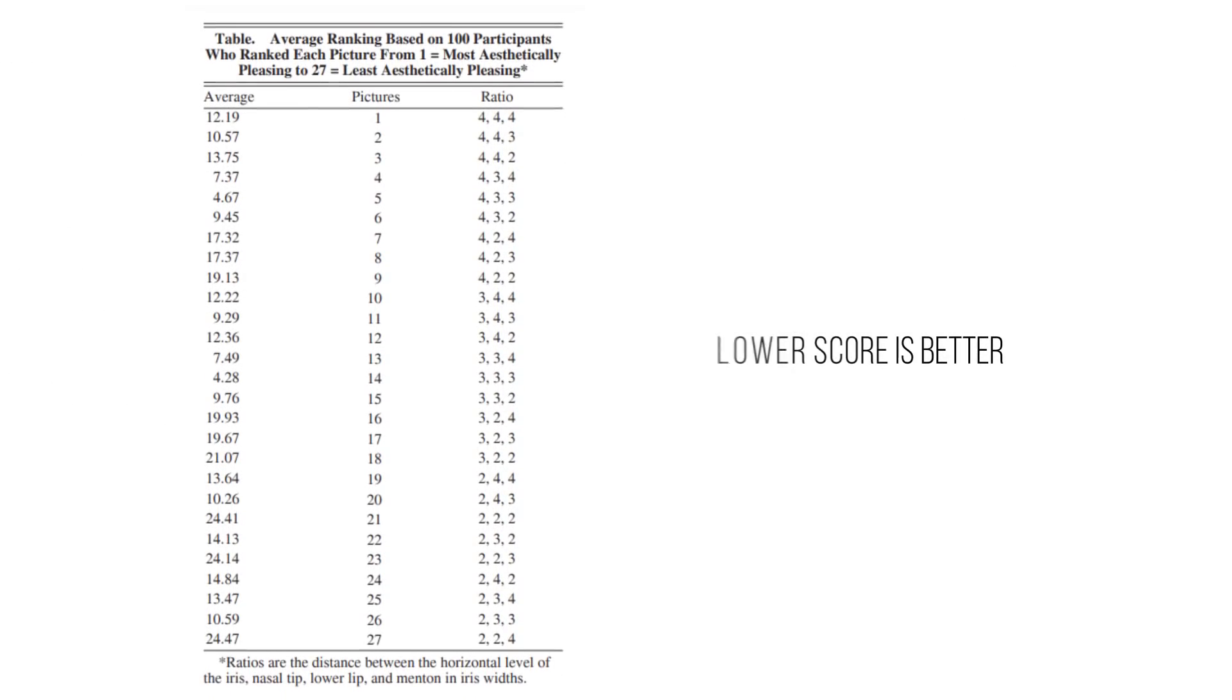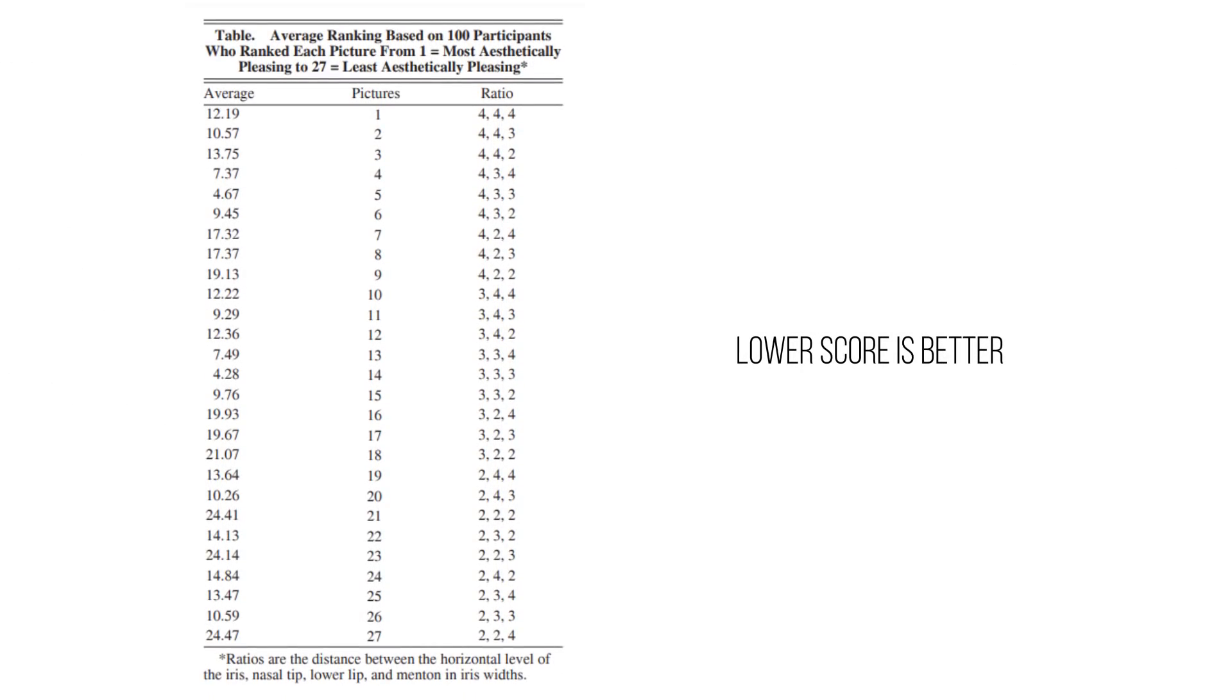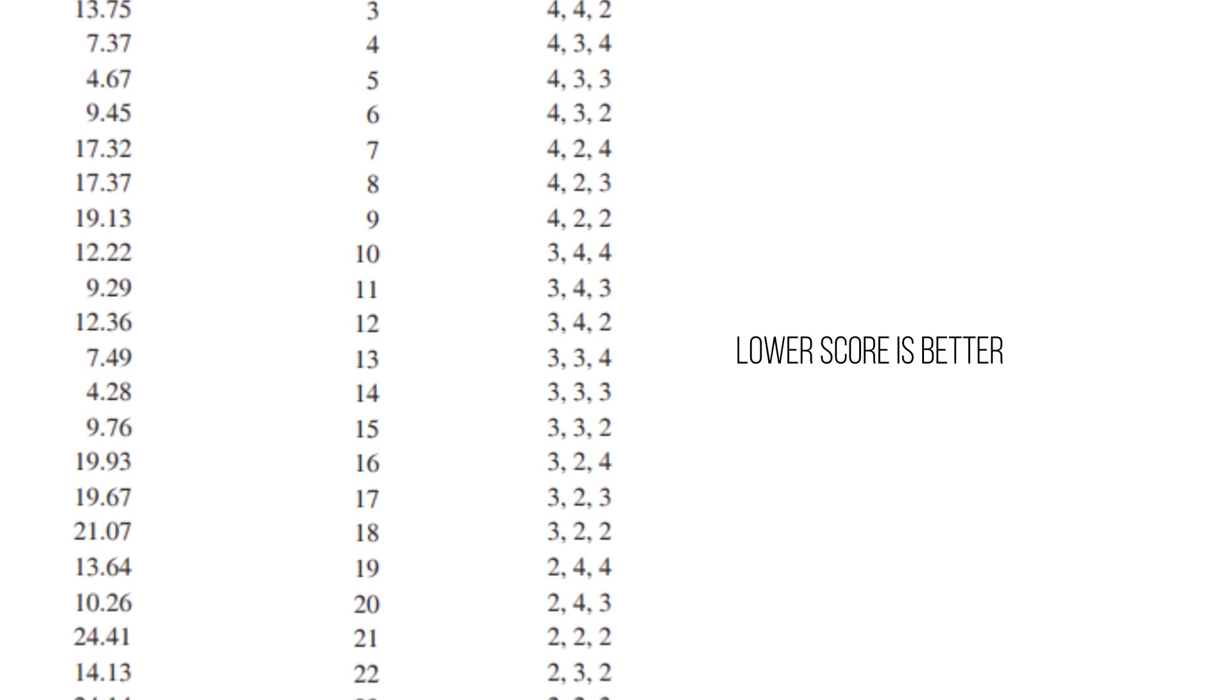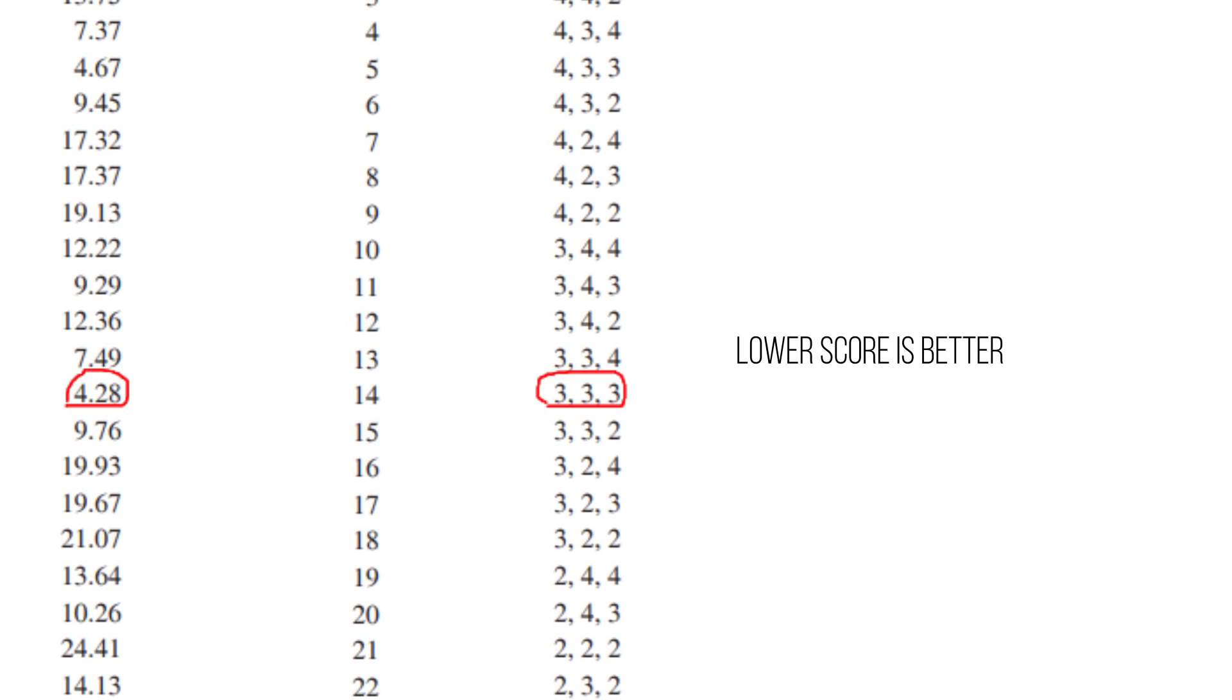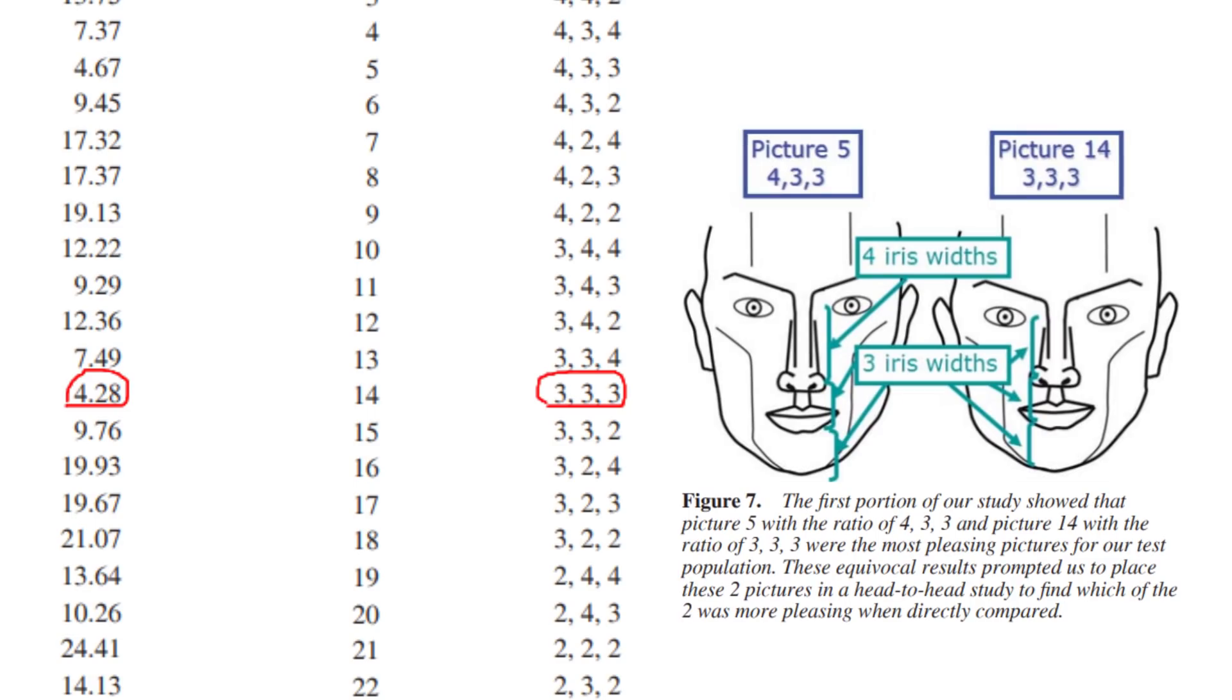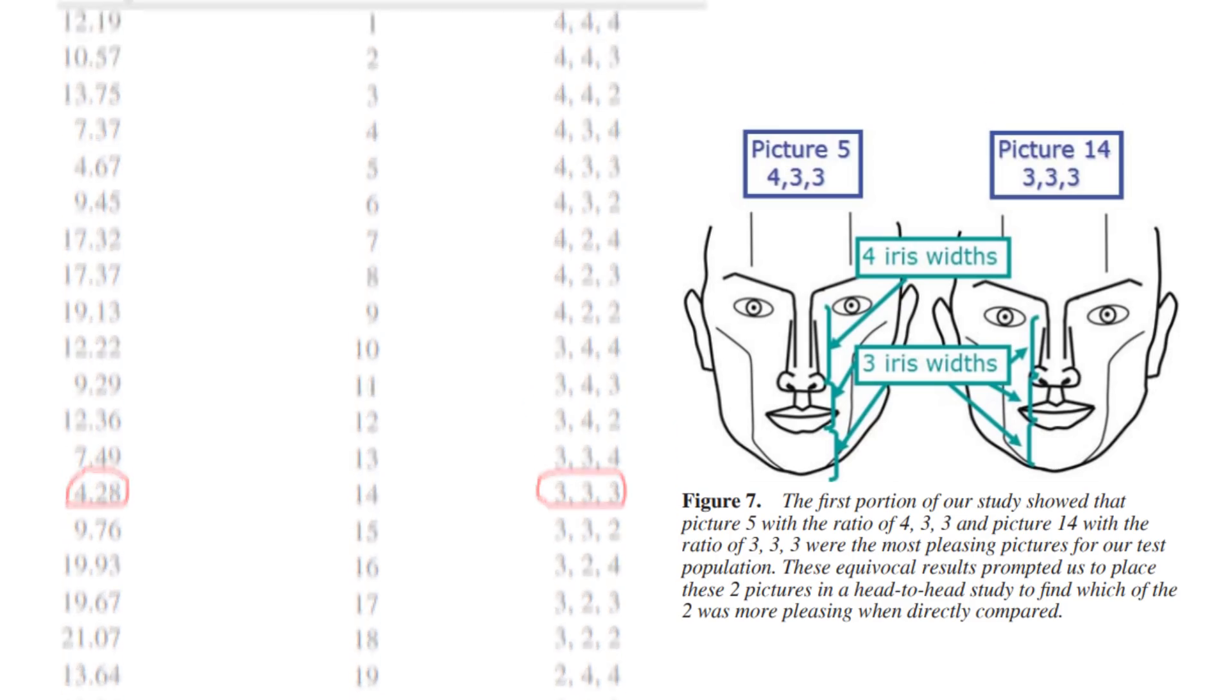To round out the circle of prominence theory, pun most definitely intended, we'll briefly discuss some aesthetic ratios. Young's third paper on the topic found ratios of 3 iris widths for each physiognomical segment to be most aesthetic, with a 4-3-3 ratio coming second that has a slightly larger midface.